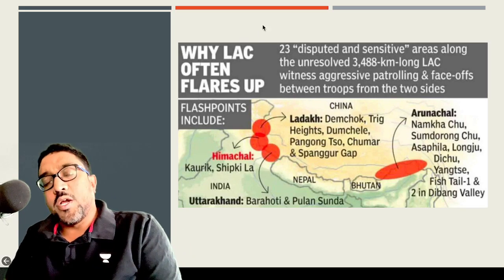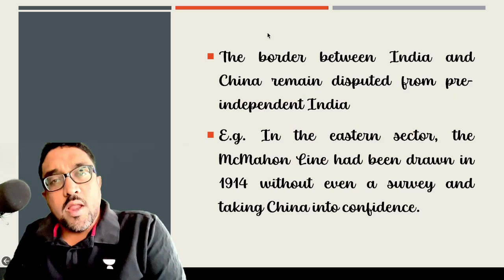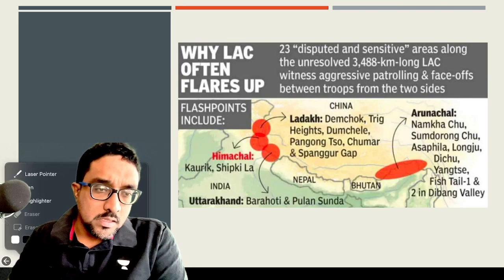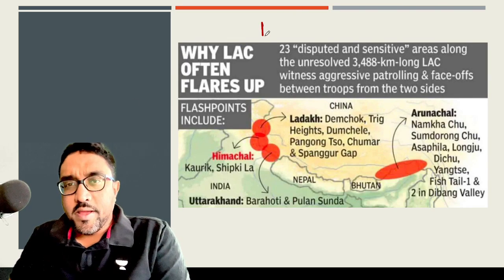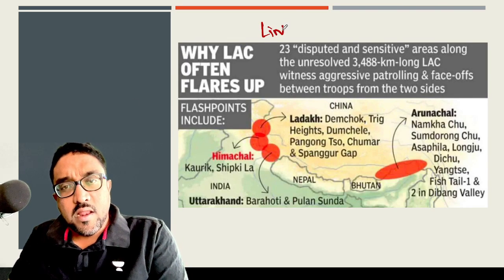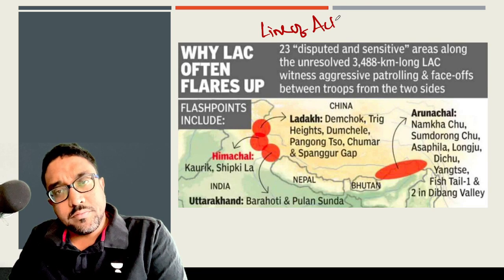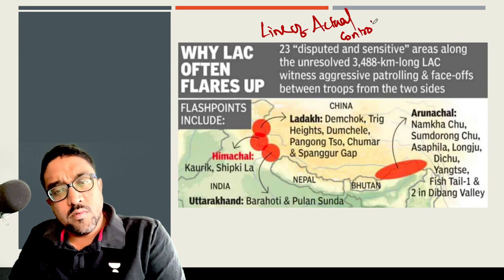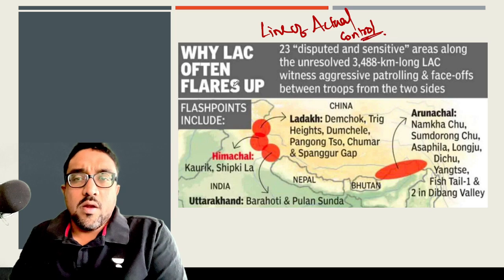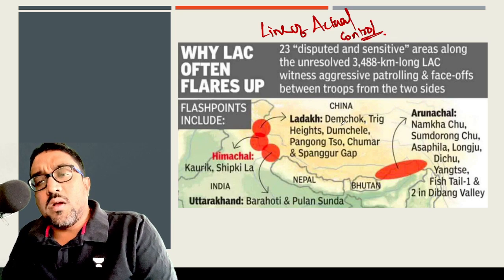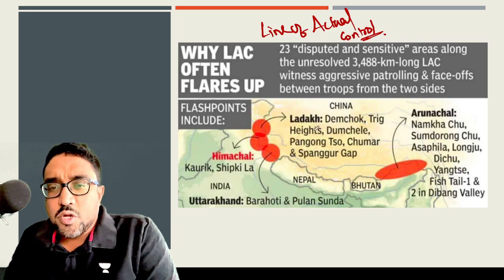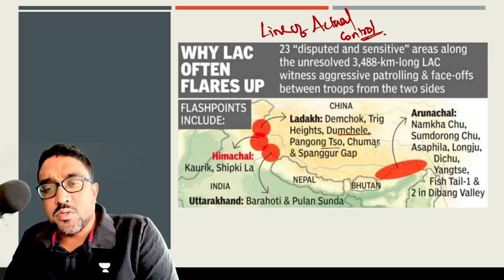The border between India and China is generally called Line of Actual Control — that's L-A-C, Line of Actual Control. The problem comes mainly in some areas like Damchok, Trighai, Zumshale, Pangsoor, Shumar, and Swakumgap.